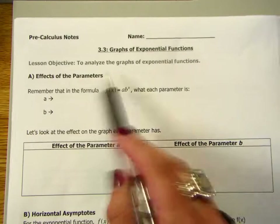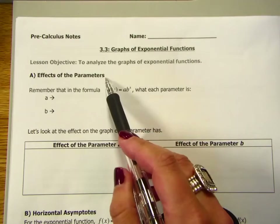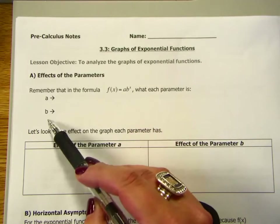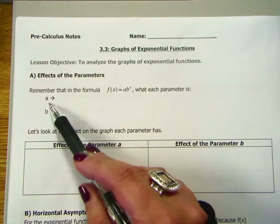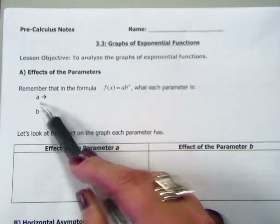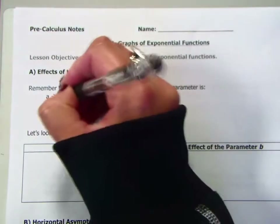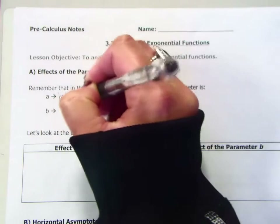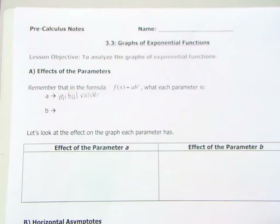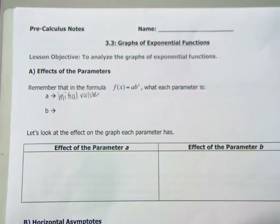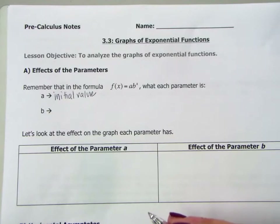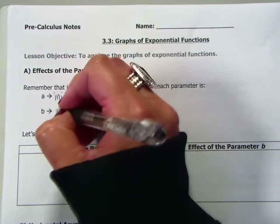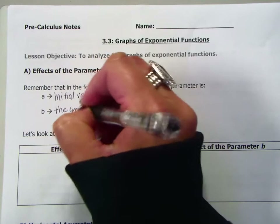The first thing that we need to look at are the effects of the parameters. Your parameters of this function are the values of A and B. What does the value of A tell us in our exponential function? This is our initial value. And then the value of B is the growth factor.